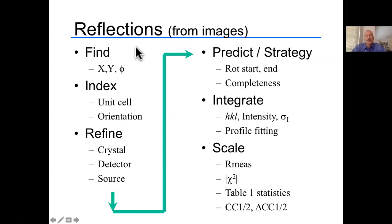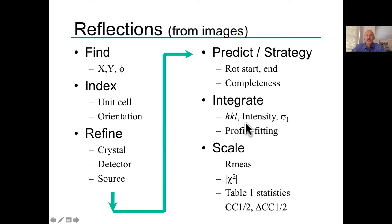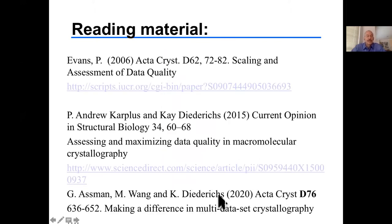Once you have a set of images, whether from one crystal or multiple crystals, you search for spots, do indexing to get the unit cell and its orientation, refine those properties, predict them, and integrate them. Now we have several lists of Miller indices HKL, the intensities corresponding to those HKLs, and their standard deviations. This lecture is all about scaling. The reading material — these three papers are in particular related to scaling.